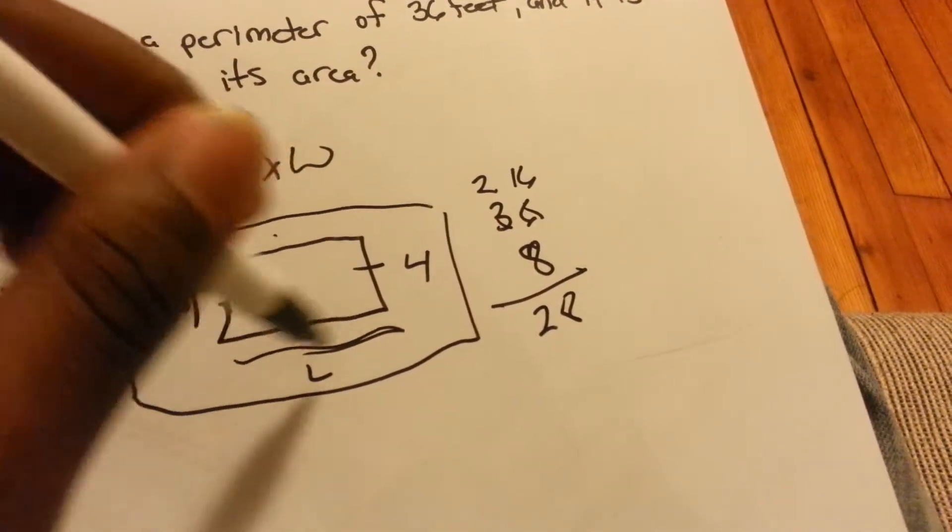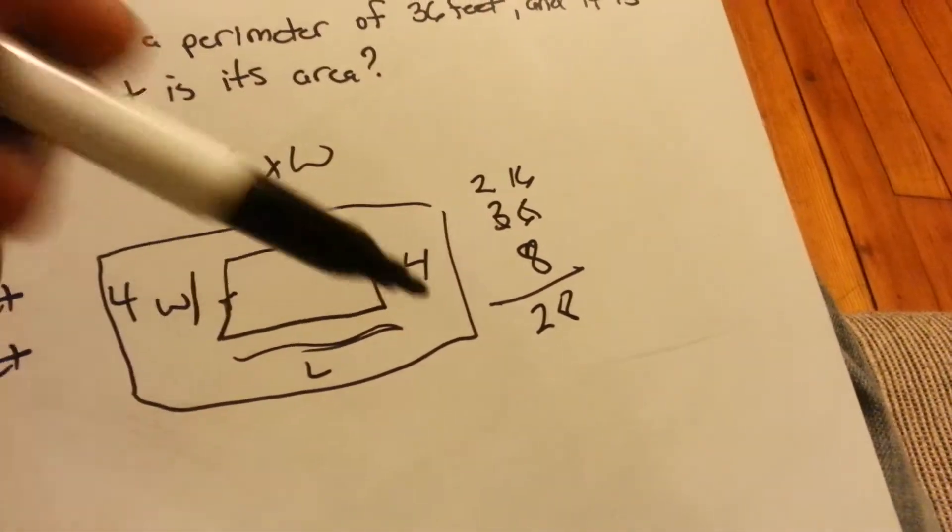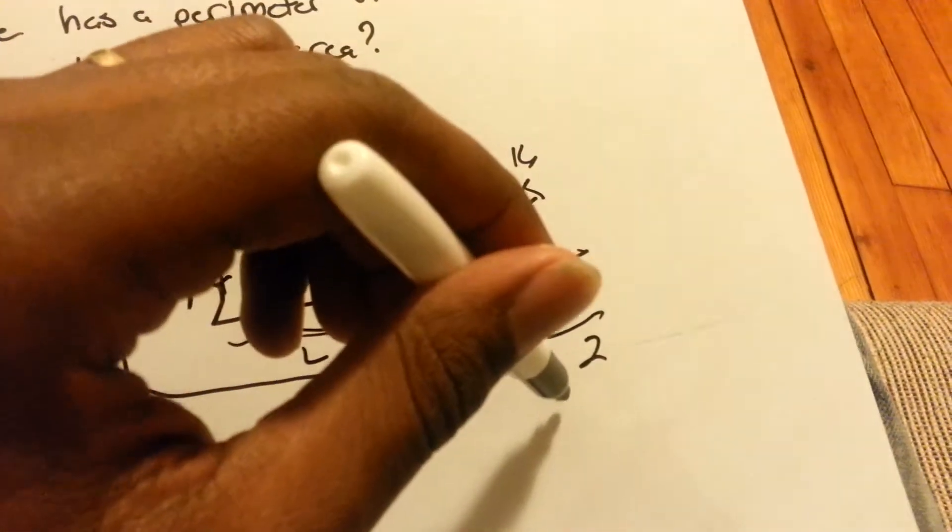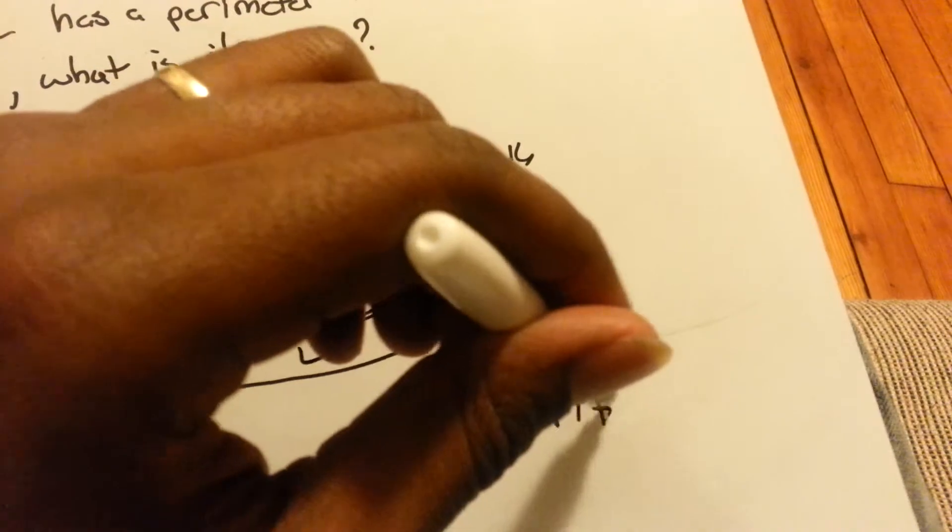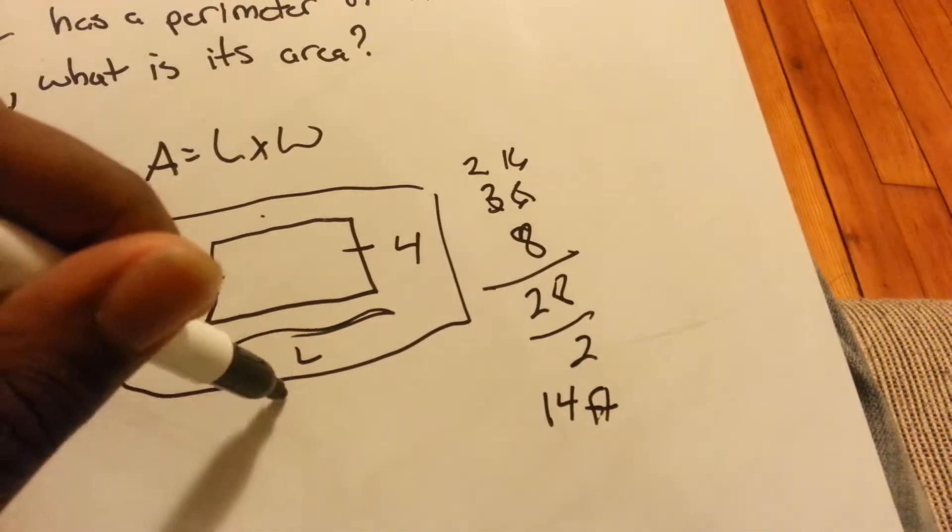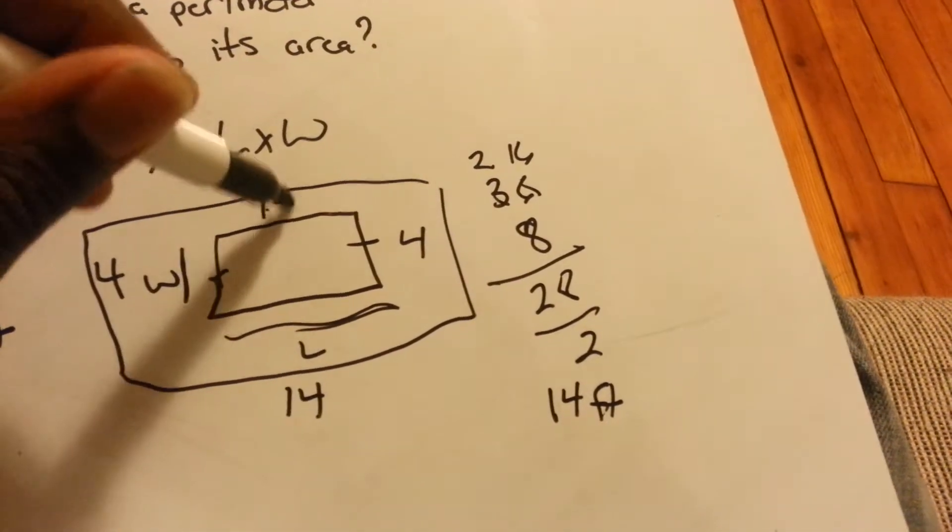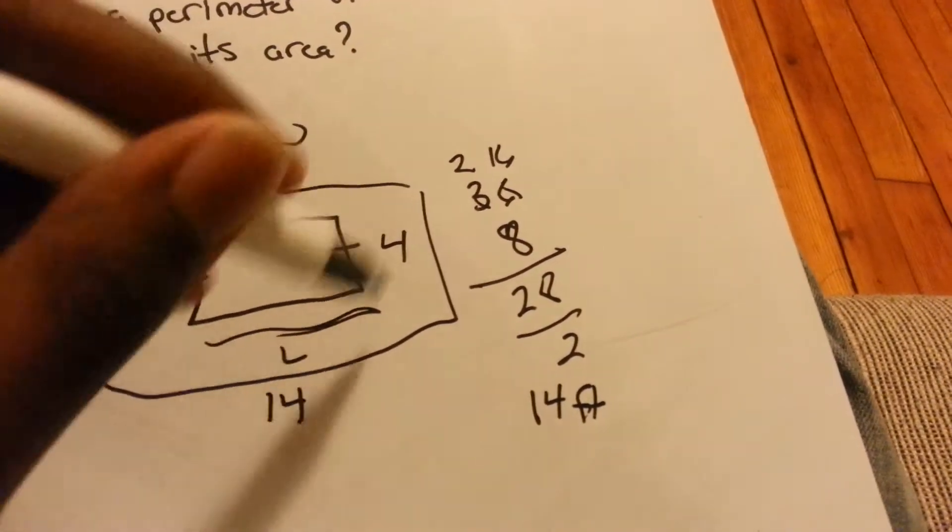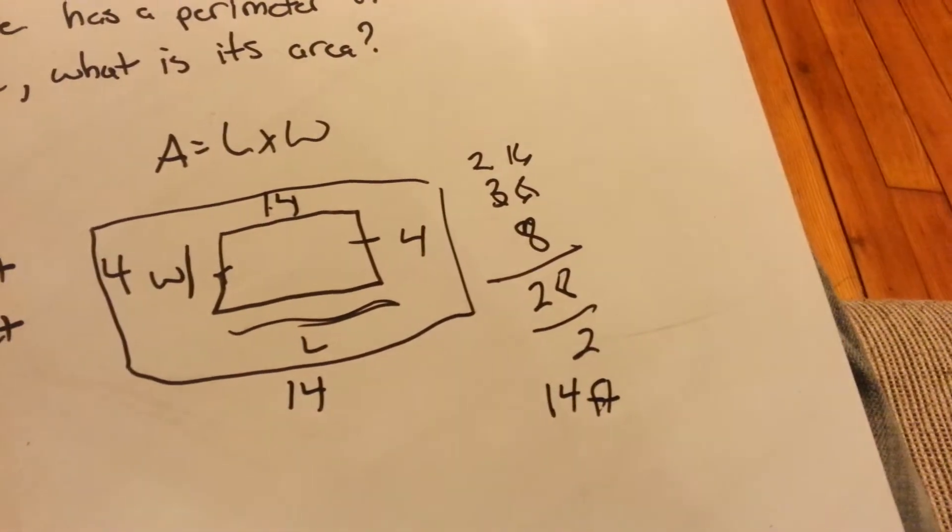So since we have two sides, we have to divide that 28 by 2, which would give us 14 feet for one side and 14 feet for the other side. And if you add it up, that will be 36 feet for the total perimeter.